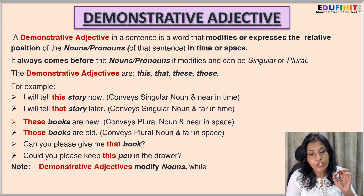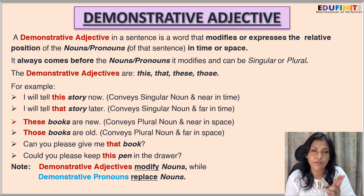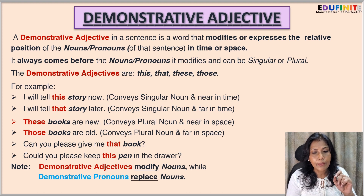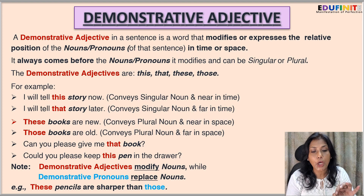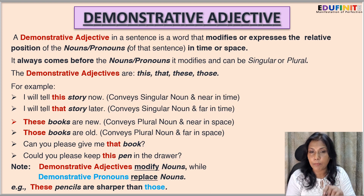Note: demonstrative adjectives modify nouns while demonstrative pronouns replace nouns. The words this, that, these, and those are also used as demonstrative pronouns. The difference is that a demonstrative adjective modifies the noun, so just after it there will be a noun, whereas a demonstrative pronoun replaces the noun, so there will be no noun after it. For example: 'These pencils are sharper than those.' Here 'these' is a demonstrative adjective because it is followed by the noun 'pencils,' while 'those' is a demonstrative pronoun because no noun follows it — it has replaced the noun 'pencils.'